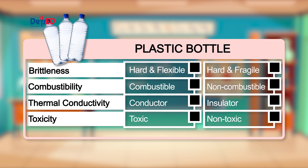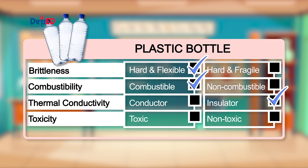For the last object, we have a mineral plastic bottle. Is it hard and fragile or hard and flexible? It is hard and flexible — it does not break easily. In terms of combustibility, it is combustible; plastic is an example of a combustible material. Does it allow heat to pass through? It is not a good conductor of heat; therefore, it is an insulator. That is why handles of a cooking pot are fitted with plastic. Is it toxic or non-toxic? It is a non-toxic material. We even use food containers made of plastic.